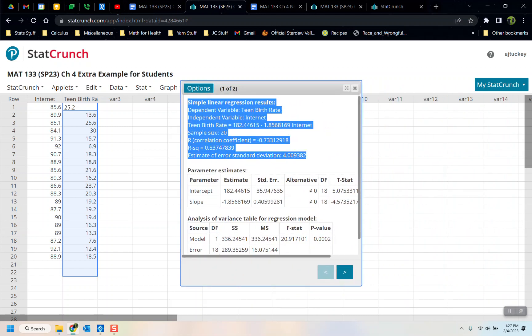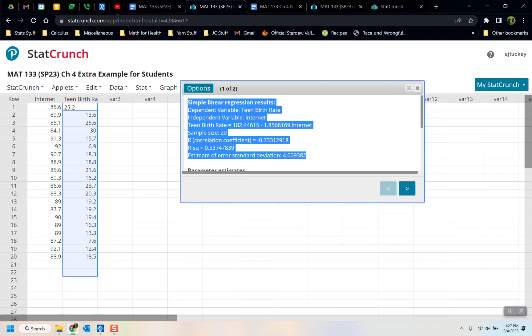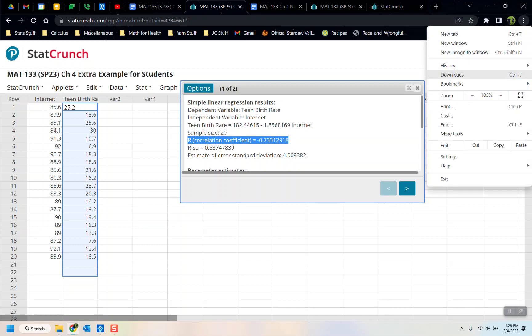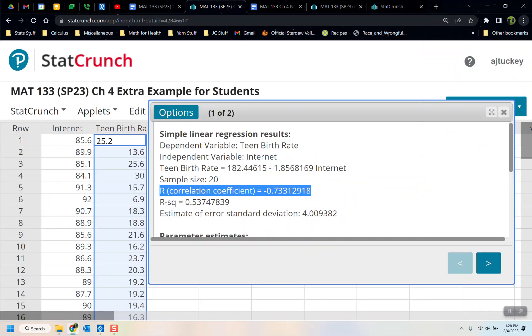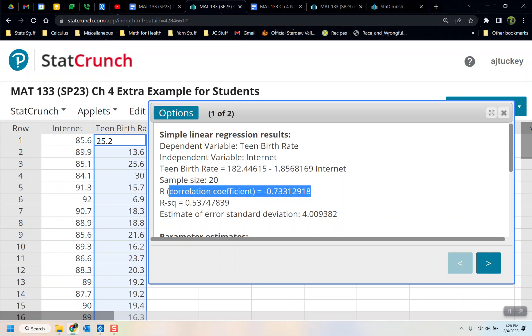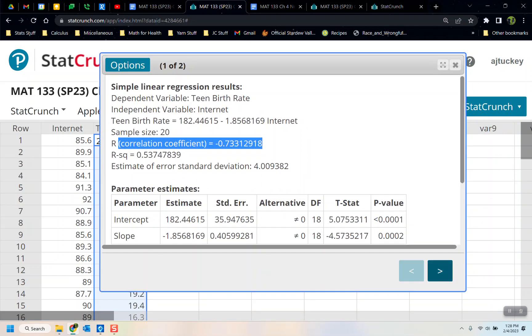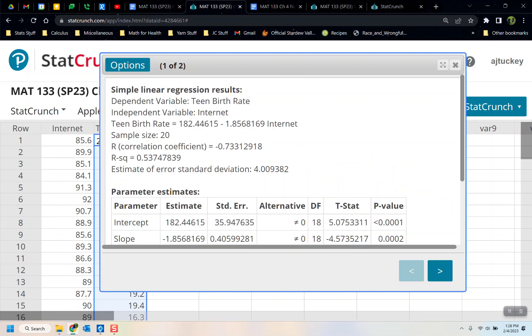So all the important pieces we need are right up here in the top. It's letting us know, by the way, that the dependent variable, that's the response variable, dependent is an algebra term, response is a statistics term, but it's the teen birth rate. And the independent variable, which is your x, that's your internet. So independent is the way algebra refers to it. We refer to it as an explanatory variable. So it's internet. The correlation coefficient is right here. Let me make this a little bit bigger for you. If I zoom in, you can see. The correlation coefficient is negative 0.733. And the rest of this stuff, by the way, we don't need. It's just there for our own benefits. If we want to see a graph, it's over here. But the correlation coefficient is right there.